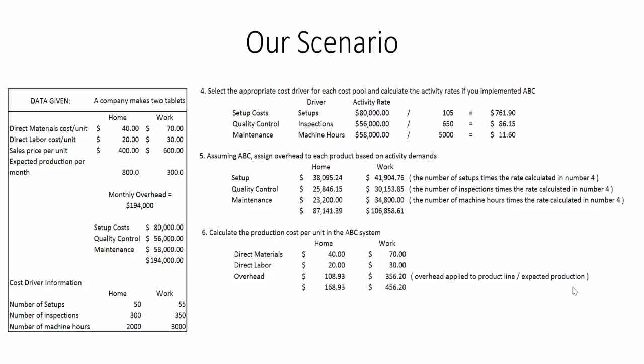We then calculate production costs per unit in the ABC system. Direct materials is still $40 for the home tablet, $20 of direct labor, and now overhead is $108.93. We take the overhead applied to the product line — approximately $87,140 — and divide by expected production of 800, giving us approximately $108.93. So our total cost for producing the home tablet is $40 plus $20 plus $108.93, equaling $168.93.